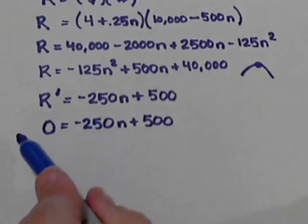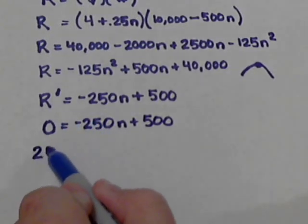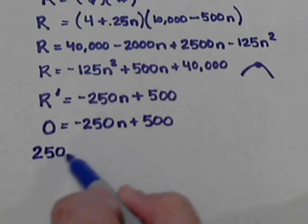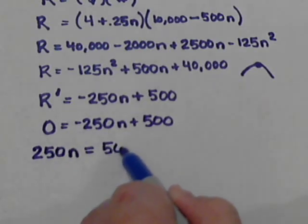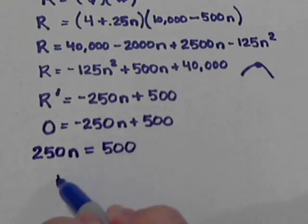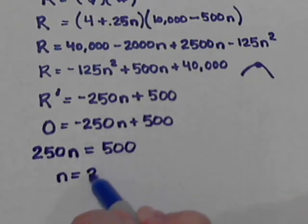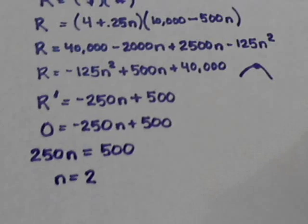We're going to move the 250 over to the left. So, we move the negative 250 over to the left, it becomes positive 250n equals 500. And we see we get a nice answer of n being 2.